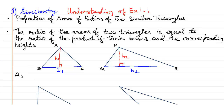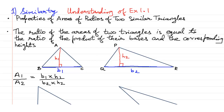Then, area of triangle ABC upon area of triangle PQR is equal to base 1 into height 1 upon base 2 into height 2. Which means if you divide the area of triangle ABC by that of triangle PQR, you just need the bases and heights of the corresponding triangles. The ratio of the areas of two triangles is equal to the product of their bases and corresponding heights.